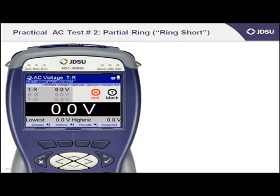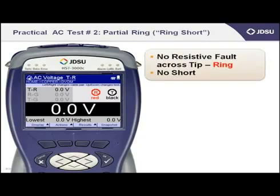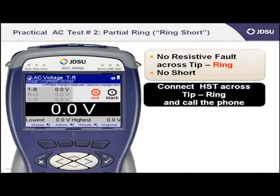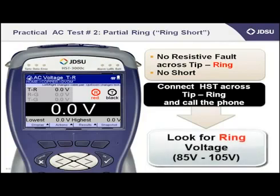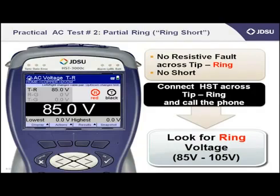Here's one more practical example for testing AC volts. Let's say you've been dispatched to the customer location because the customer has complained of a partial ring or a ring short. You test the pair and there is no resistive fault across tip and ring, which would make the line ring short. What you could do is connect the AC voltmeter across tip and ring and ring the customer's phone. The ring battery on the phone should be somewhere around 85 volts AC, which you would see on your HST, or you may see somewhere around 105 volts of ring battery from the newer digital switches. If you don't see that, there may be a problem at the switch.